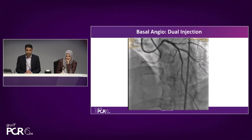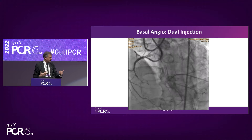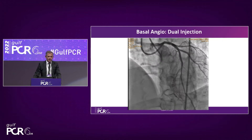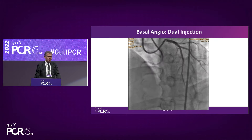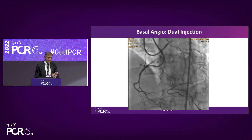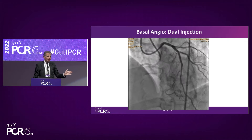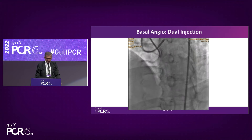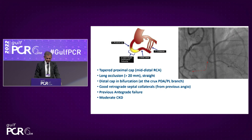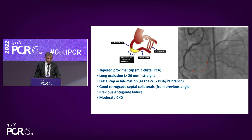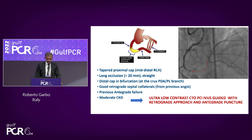The right and the PDA seem to be in two different planes. This case is really complex — the anatomy is strange and complex to understand even from the retrograde. It's not a classical crux right coronary occlusion. In summary: tapered proximal cap, long occlusion, straight distal cap at bifurcation, good retrograde collateral, previous antegrade failure, moderate CKD. This is a case for IVUS-guided low-contrast retrograde PCI with antegrade puncture.